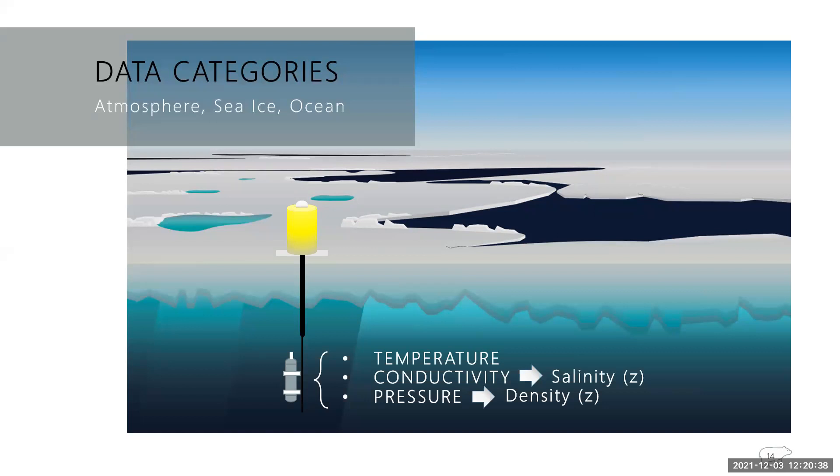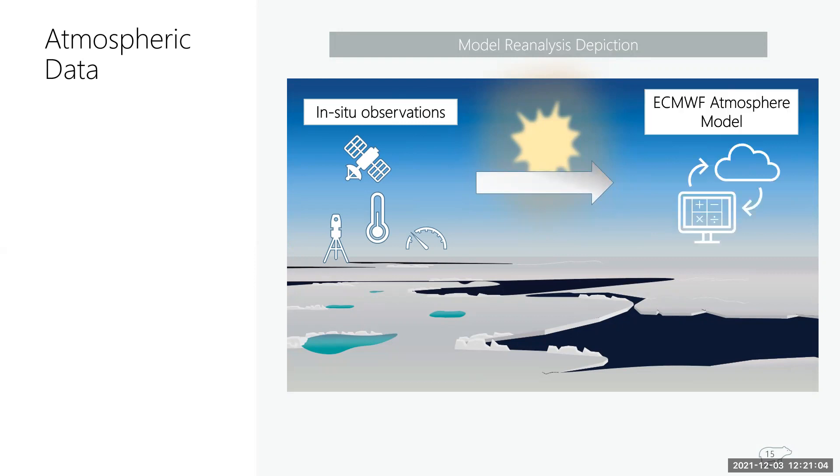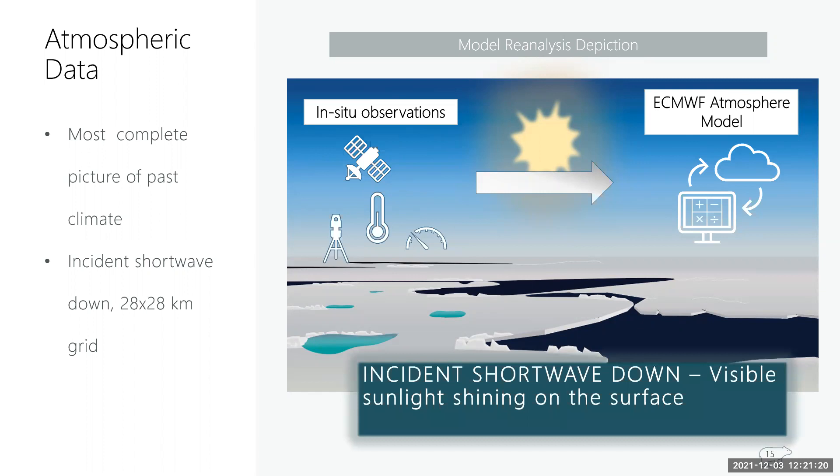And so now I'm going to explain the details of each pieces of those data. And for atmospheric data, values for visible sunlight are from model reanalysis. And model reanalysis is a process that uses in-situ observations as a baseline to an atmospheric model in order to provide the most complete picture of past climate. So local incident shortwave down data was gathered for a 28 by 28 kilometer grid. So incident shortwave down, as a reminder, is just the visible sunlight shining on the surface.